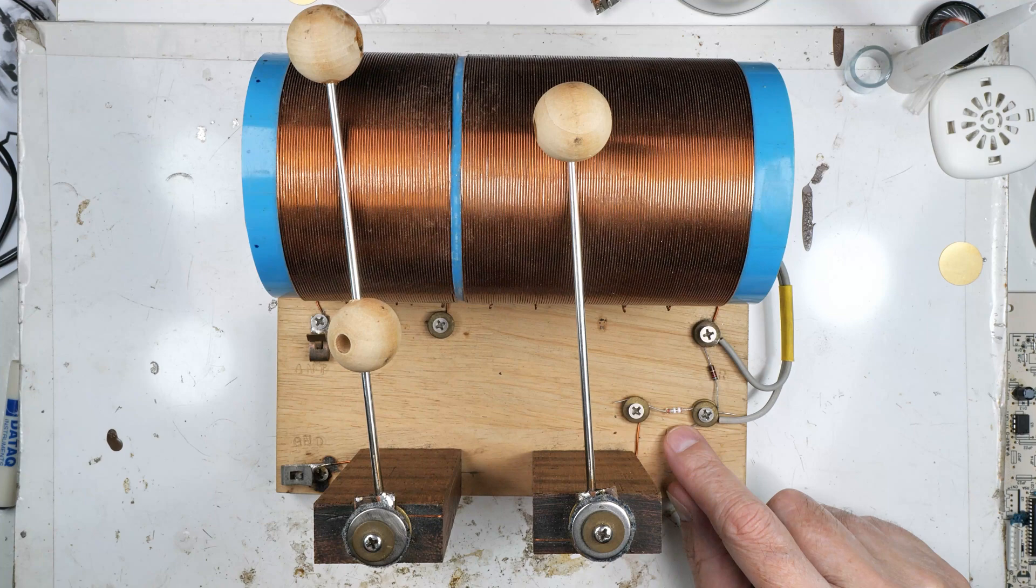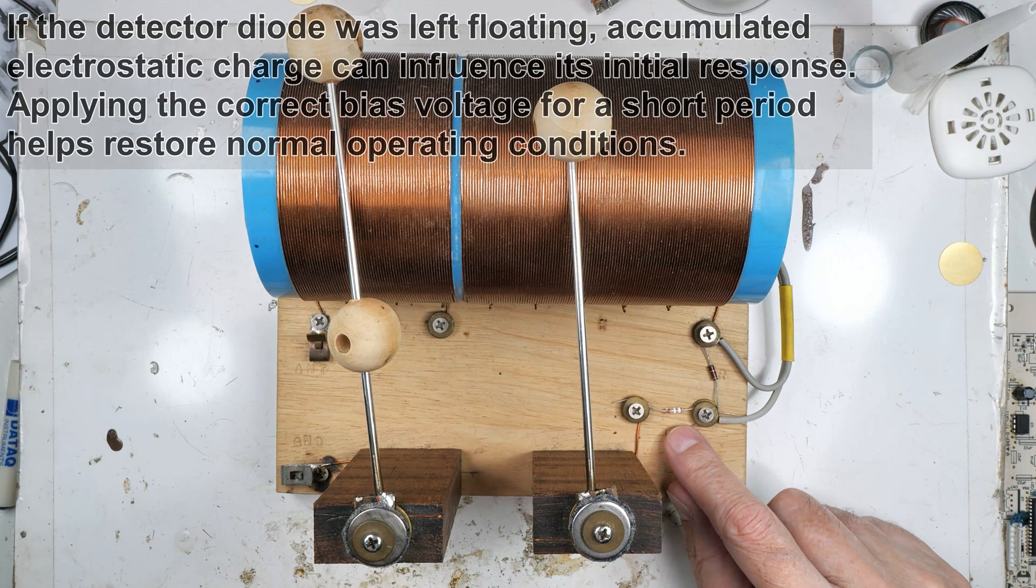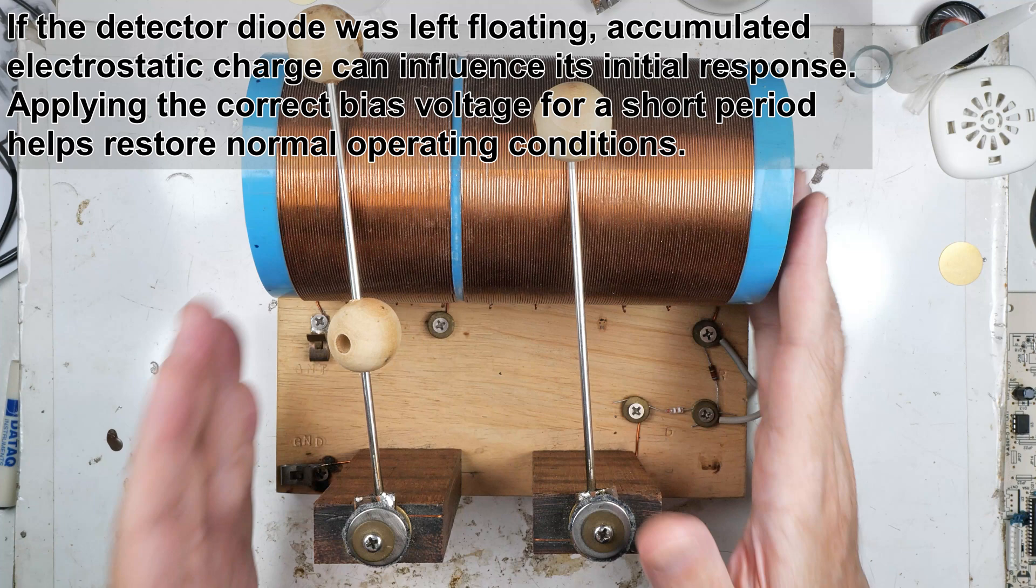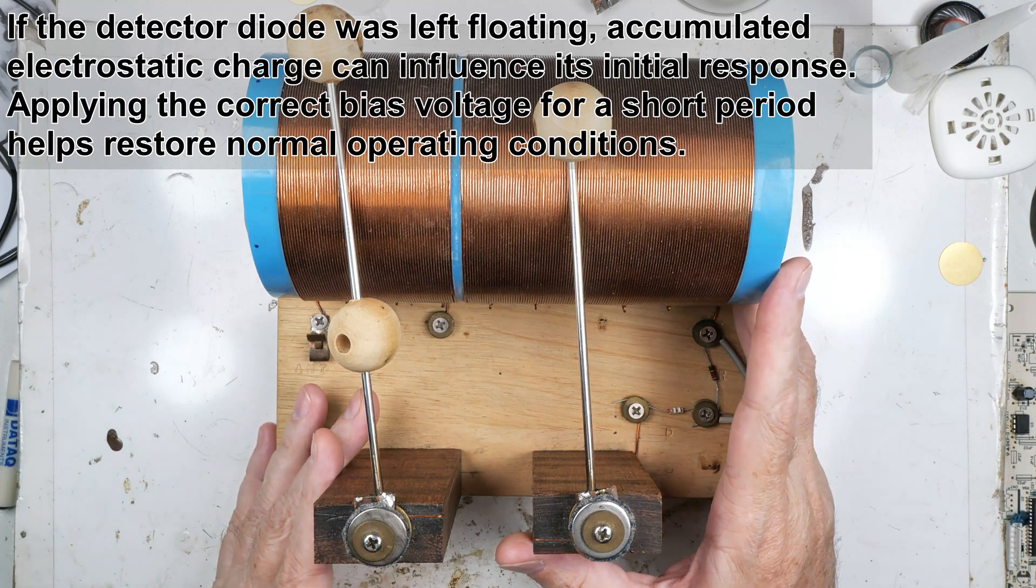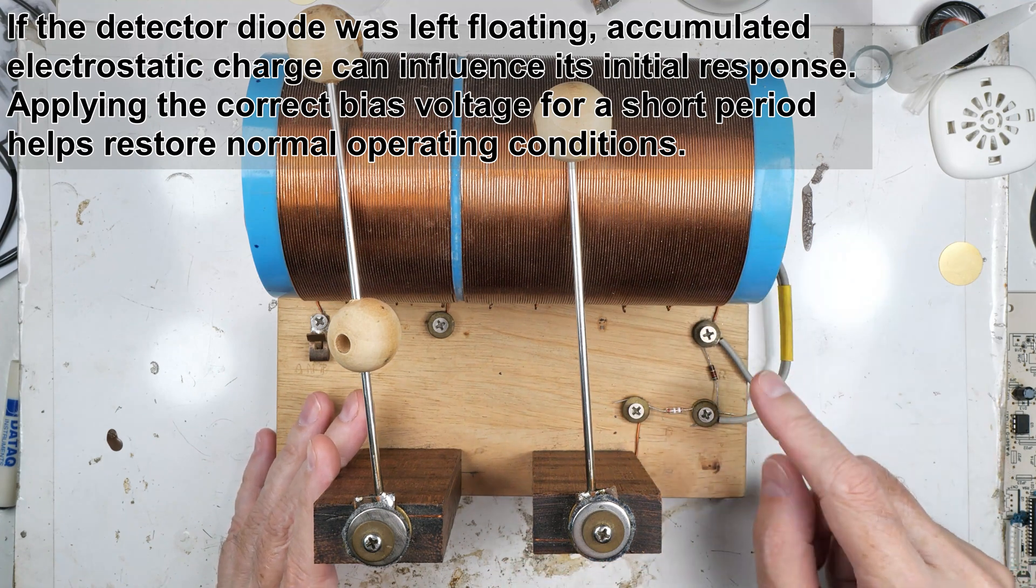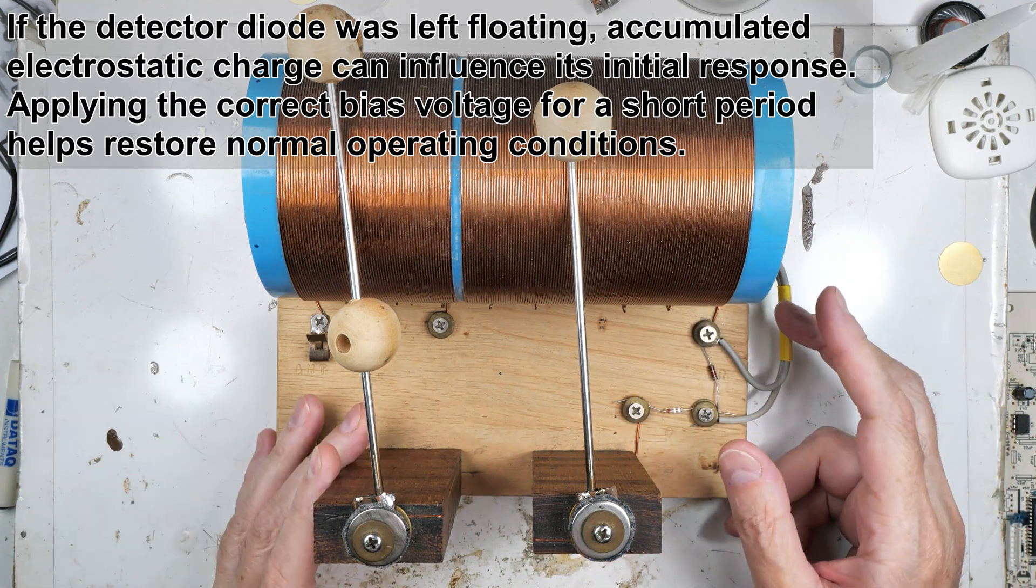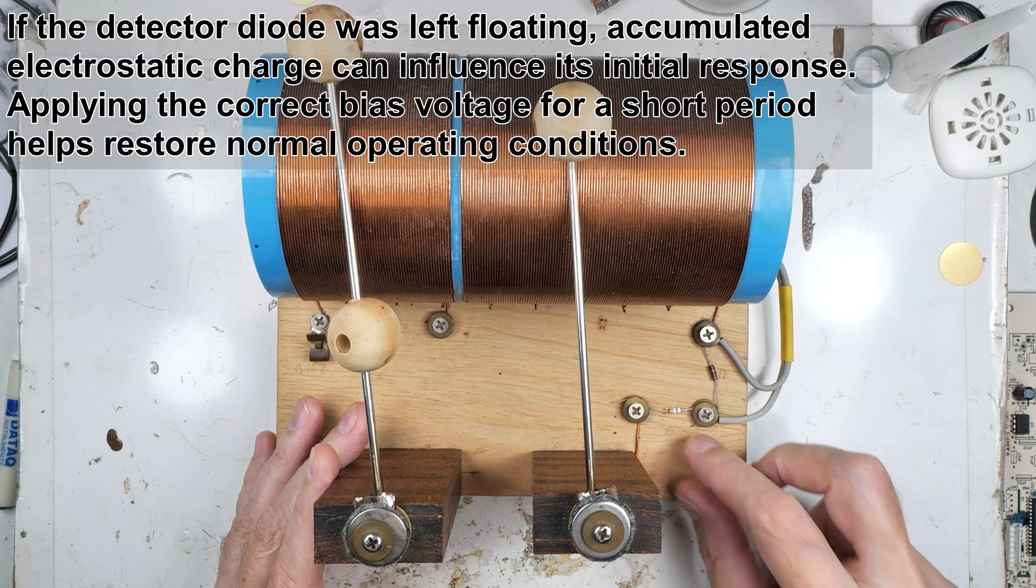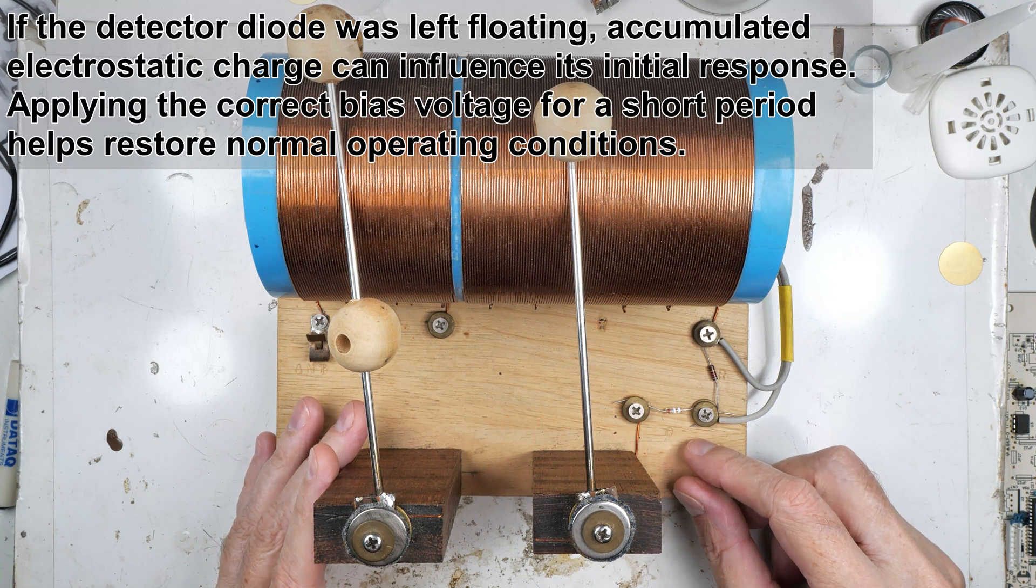And then the last thing I found was electrostatic charge accumulation in floating configurations. If it's left floating, so not connected to any biasing, well yeah, it's just sitting with the raw circuit sitting here. So accumulated electrostatic charge could influence its initial response. I guess it could. Kind of a stretch. Applying the correct bias voltage for a short period helps restore normal operating conditions.